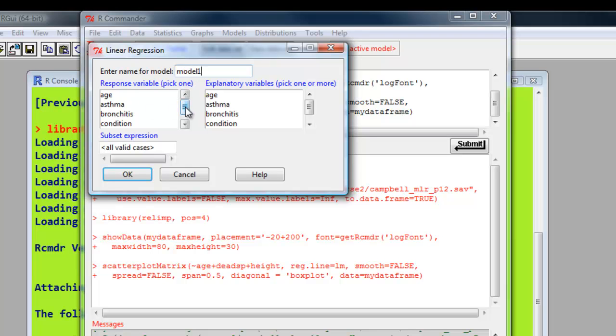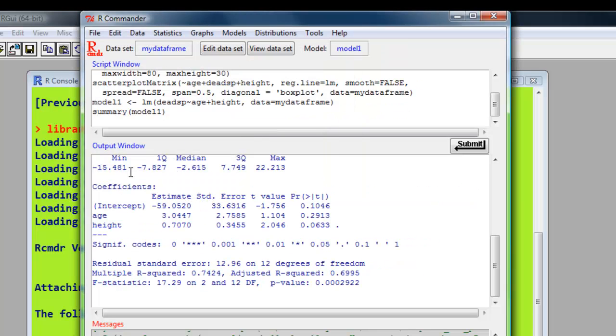And we know the response variable, the output, is dead space, and the inputs are age and height. Age, then height, press the control key. OK.